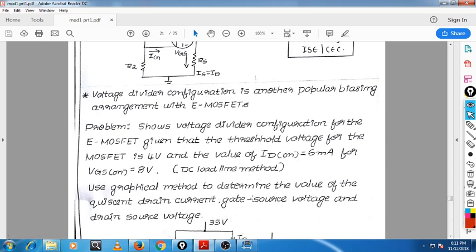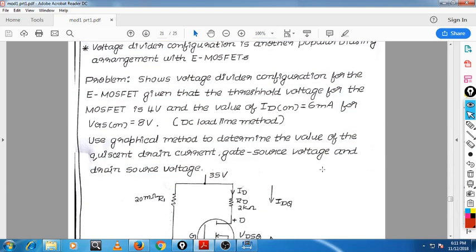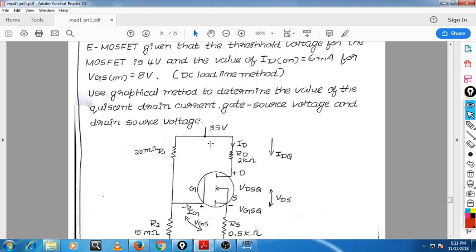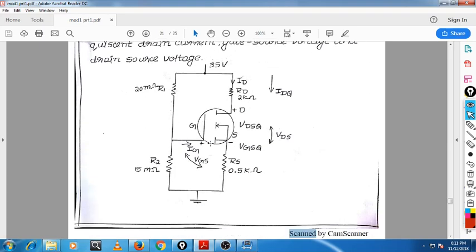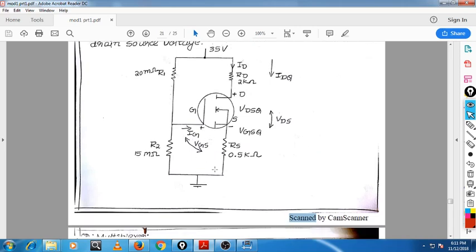So this is the diagram where R1 is equal to 20 mega ohm, R2 is 15 mega ohm, and Rd is equal to 2 kilo ohm, Rs is 0.15 kilo ohm, and Vdd is 35V. IDQ and VDS are various parameters as explained earlier.